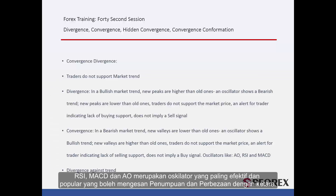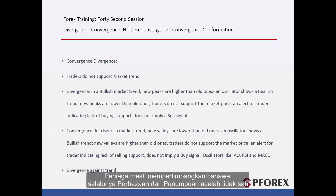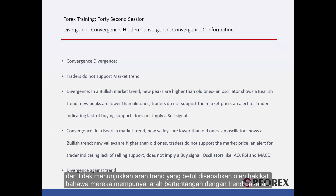RSI, MACD, and AO are the most effective and popular oscillators which can detect convergence and divergence considerably. Traders must consider that most of the time divergence and convergence are not valid and they do not show the correct trend direction, due to the fact that they have the opposite direction of a market trend.